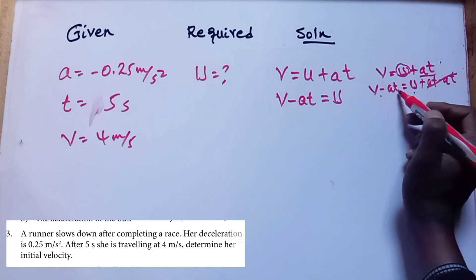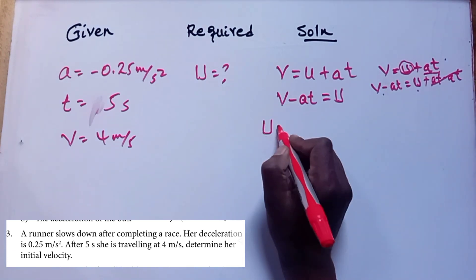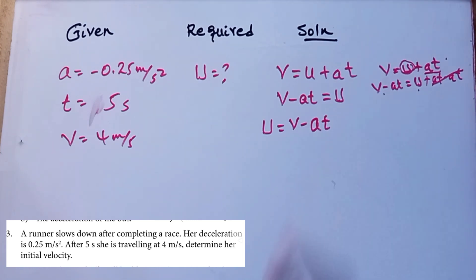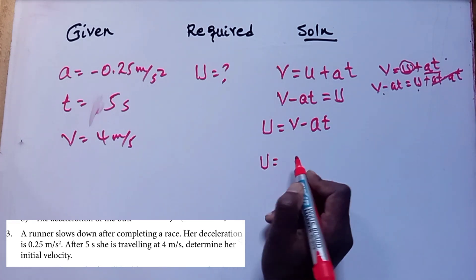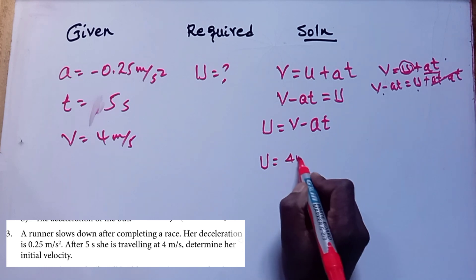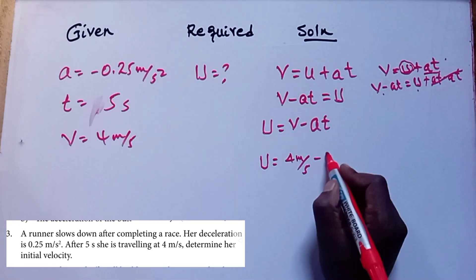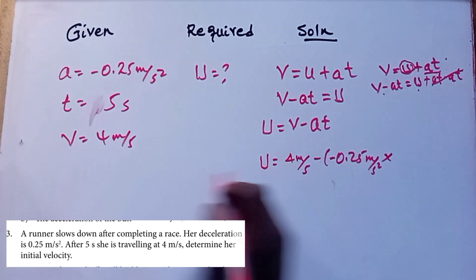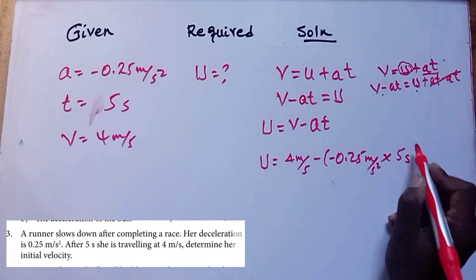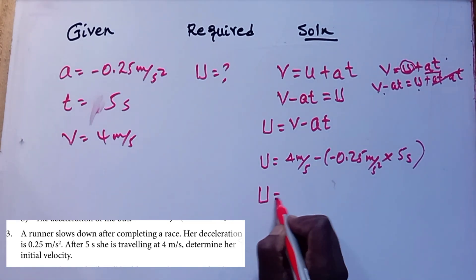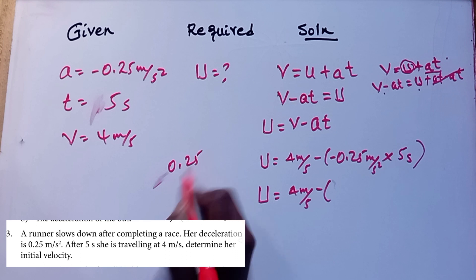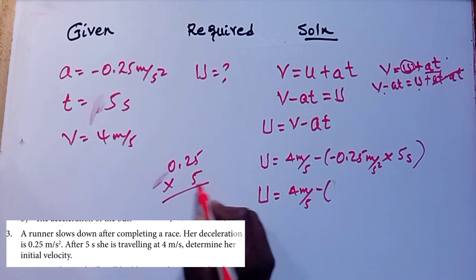So initial velocity is equal to final velocity minus acceleration times time. Initial velocity is equal to 4 m/s minus (negative 0.25 m/s²) times 5 seconds.